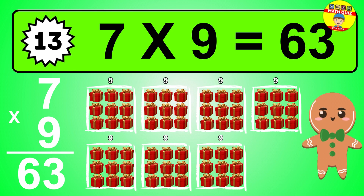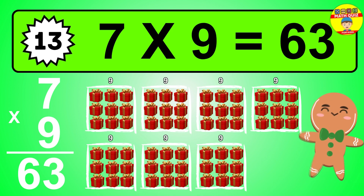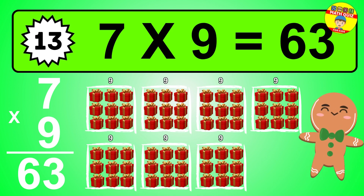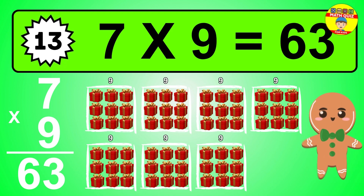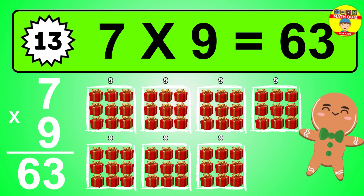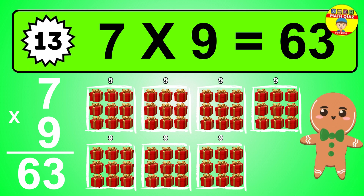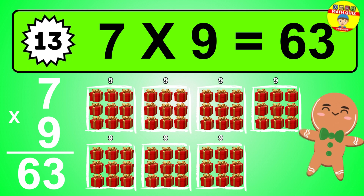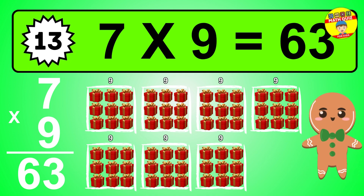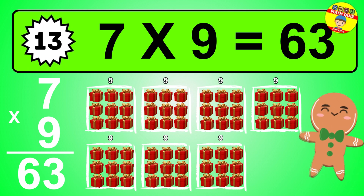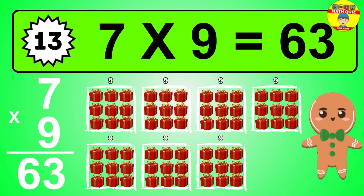The answer is sixty-three. To calculate, we have seven groups with nine balls each one. So how many balls do we have? Sixty-three balls.